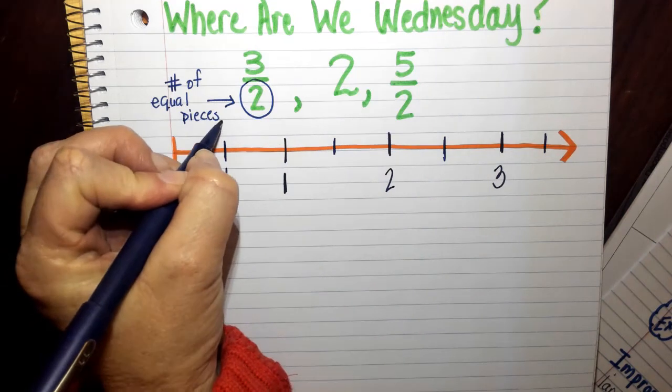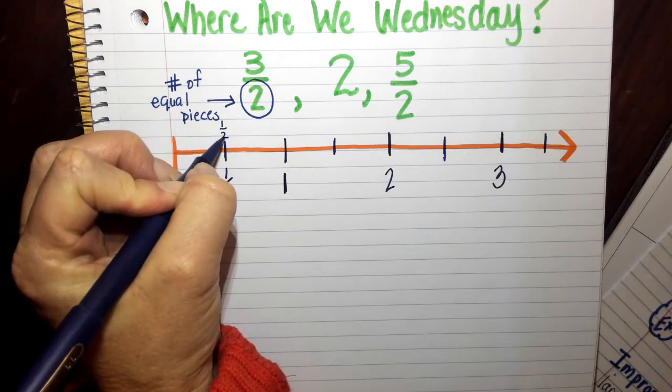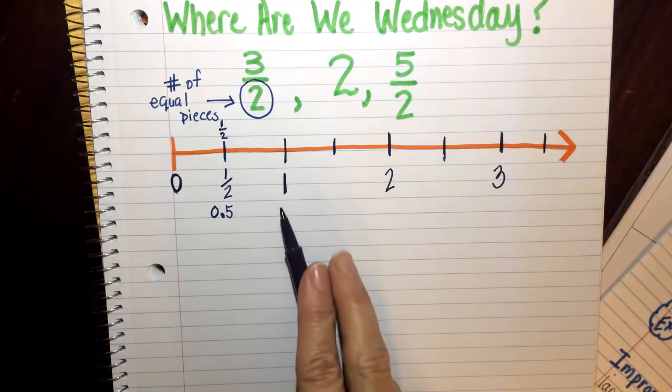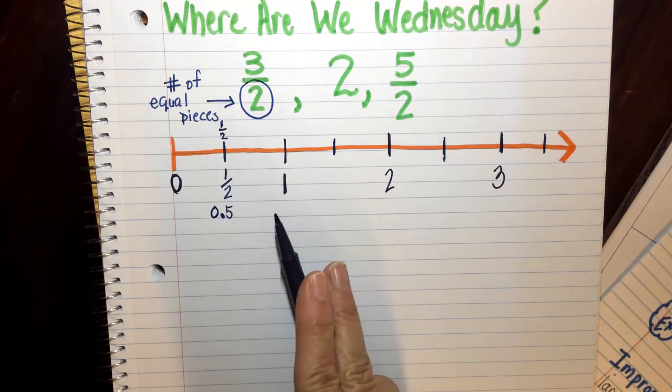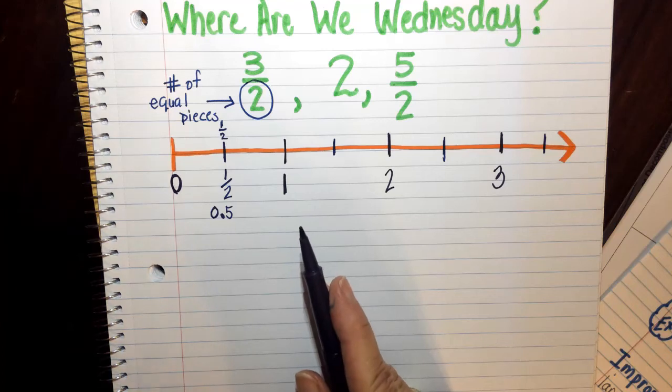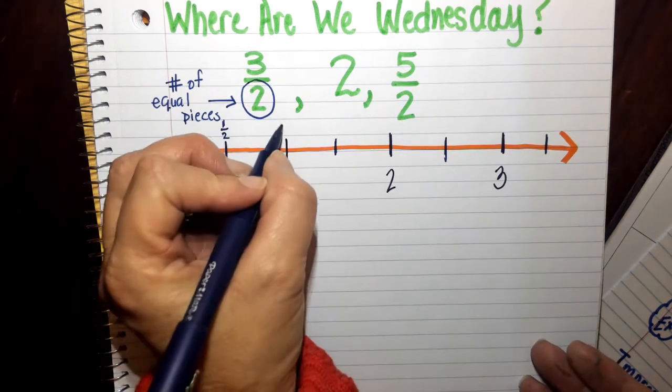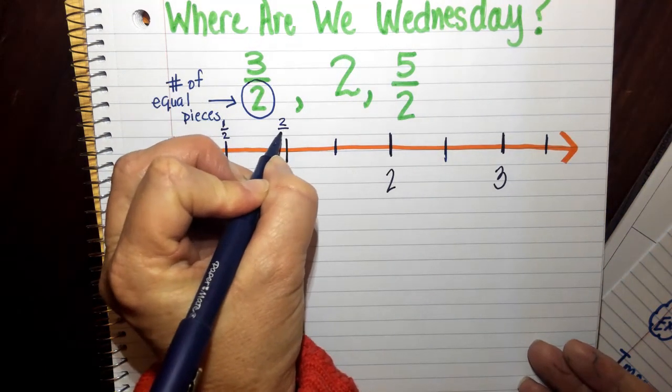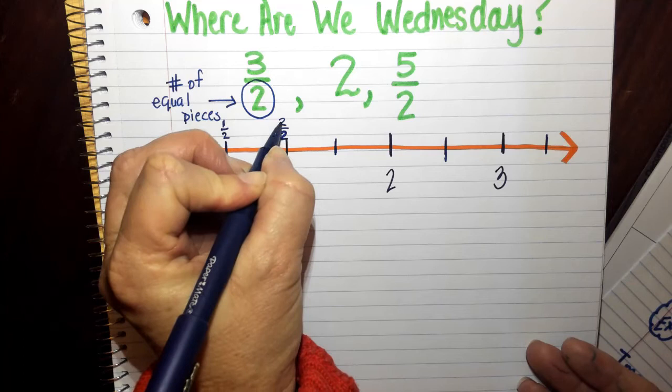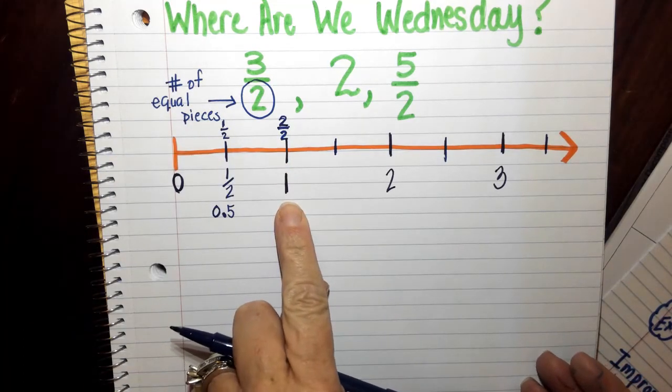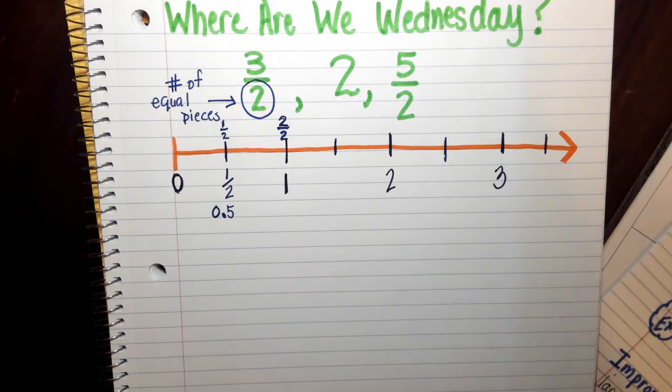I'm going to label this piece right here 1.5 too. So then I come across the number 1. What is another name for the number 1? We did a lot of this yesterday. What is it, Preston? 2 halves. Oh, 2 halves. And that makes total sense because 2 divided by 2 is what number? 1. Math should make sense. And it does, right?